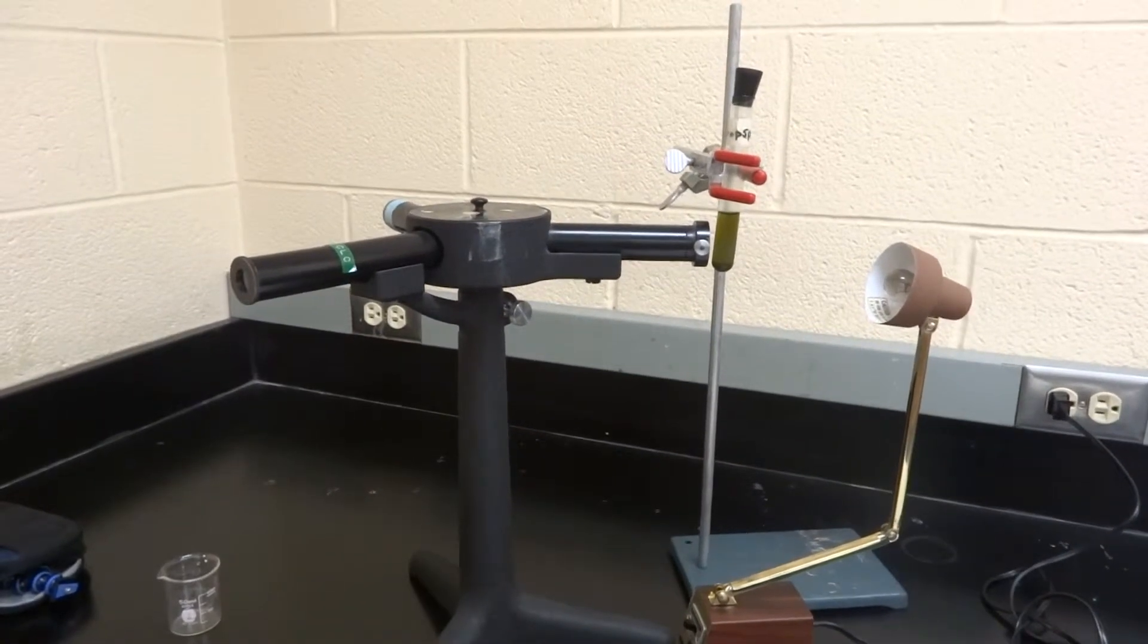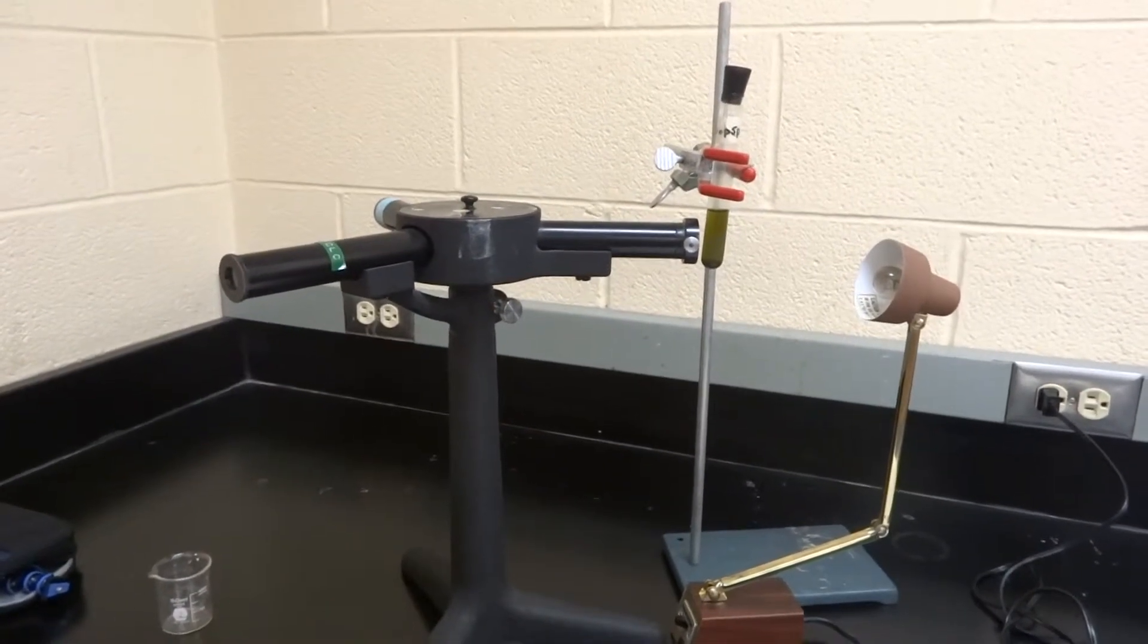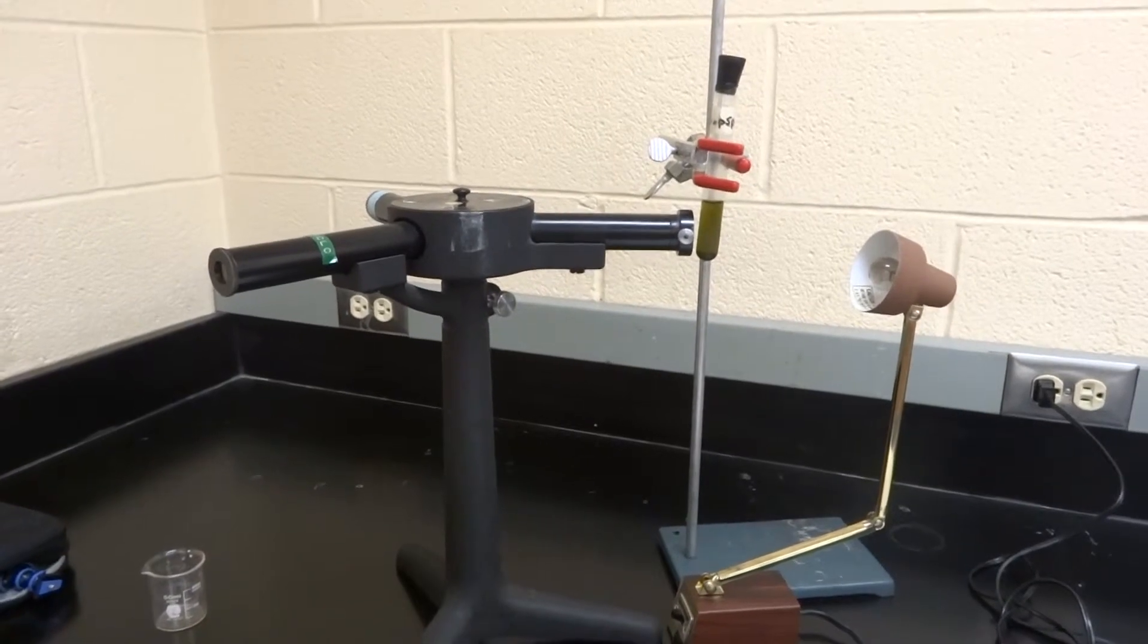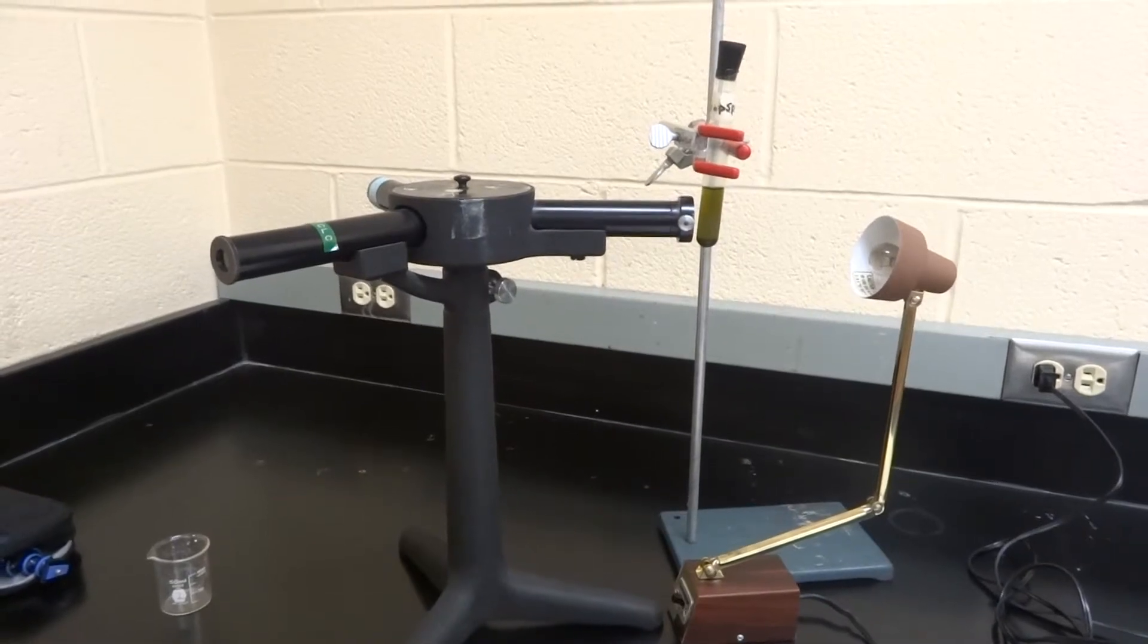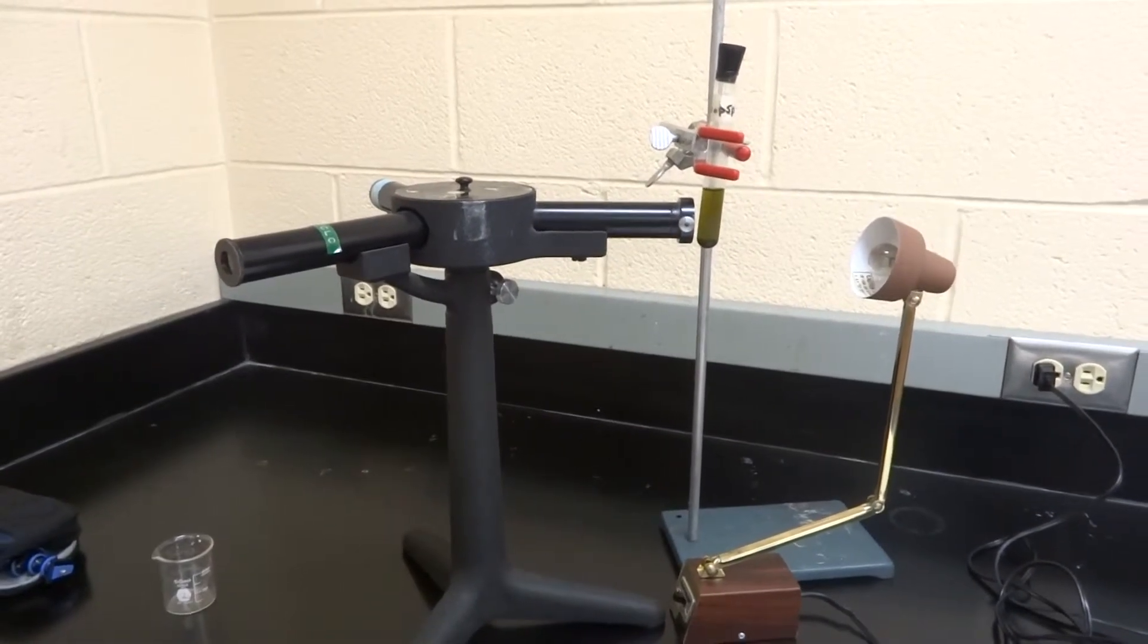So I have in front of me the last of the procedures for photosynthesis. This is procedure 8.5 where you're going to be using a spectroscope to look at how the plants are going to be using light.